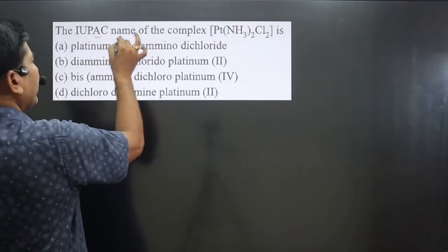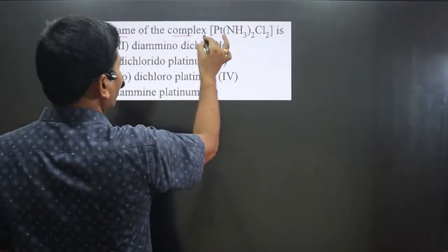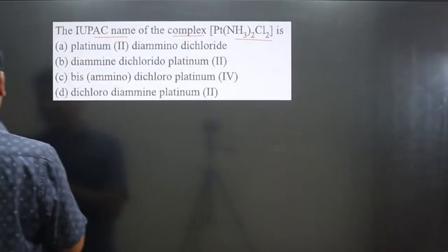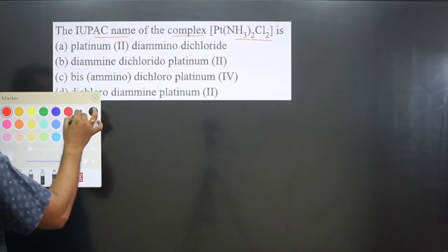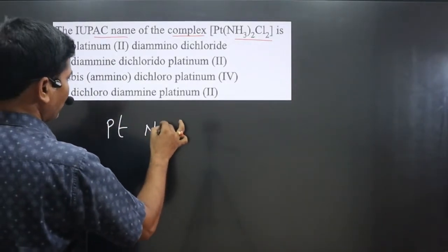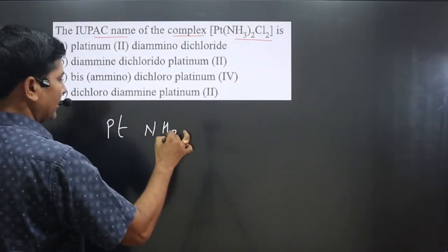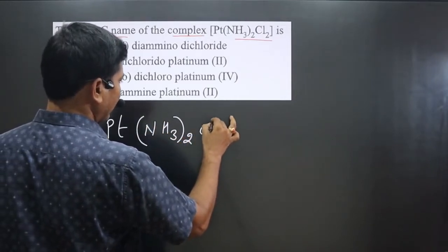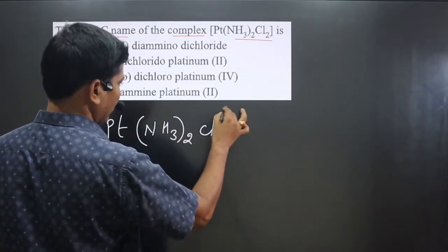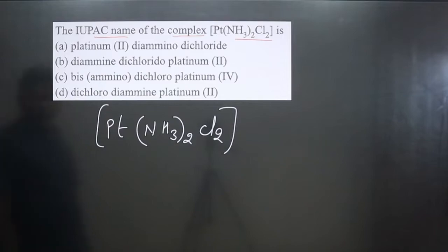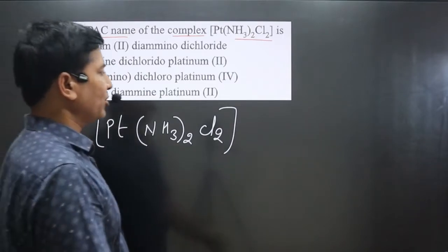The question asks for the IUPAC name of the given complex. We have platinum, then ammonia as a neutral ligand, and Cl₂. It is a neutral complex.